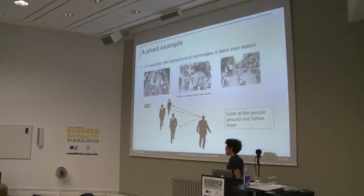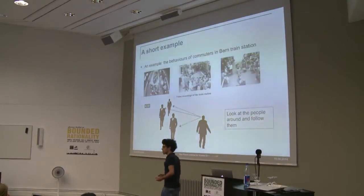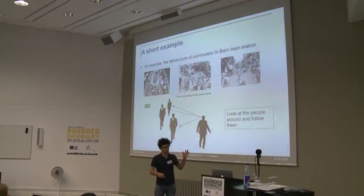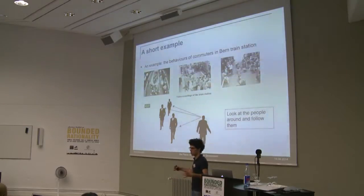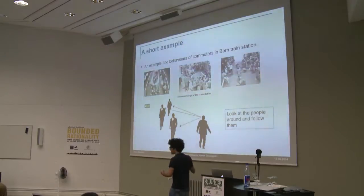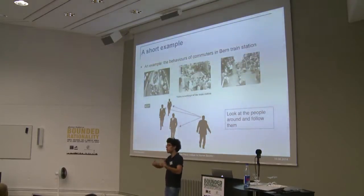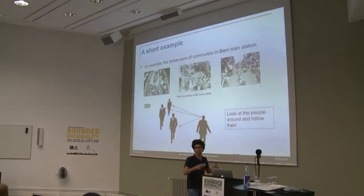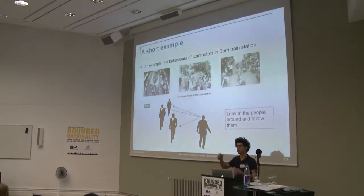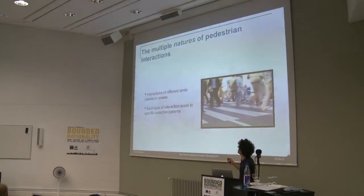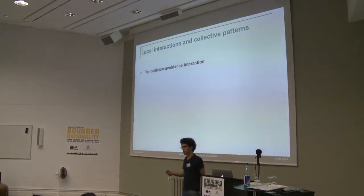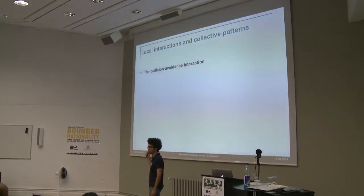That was one possible kind of simple heuristic you can find in crowds. There are different types of interactions in crowds — imitation is just one kind. I would like to review a few of them and show the connection between those simple heuristics and collective patterns, and then talk about modeling. The first type I'd like to discuss is collision avoidance — you change your behavior based on what others do, but rather than imitating, you're trying to avoid those people.